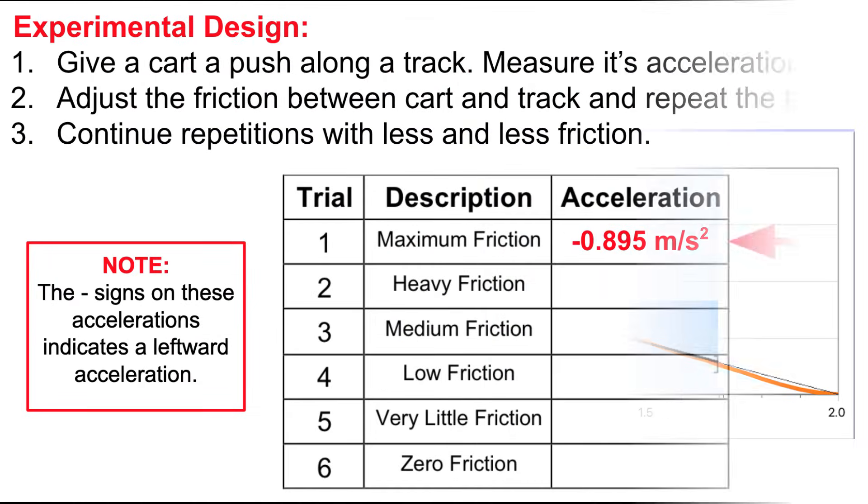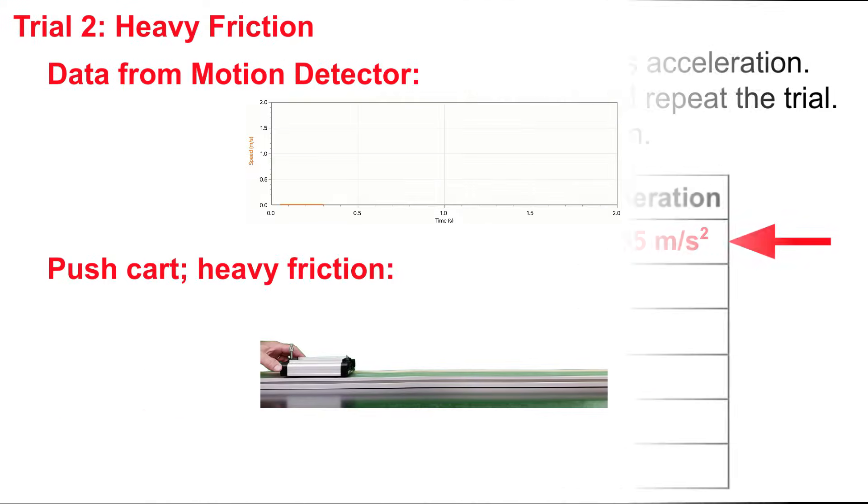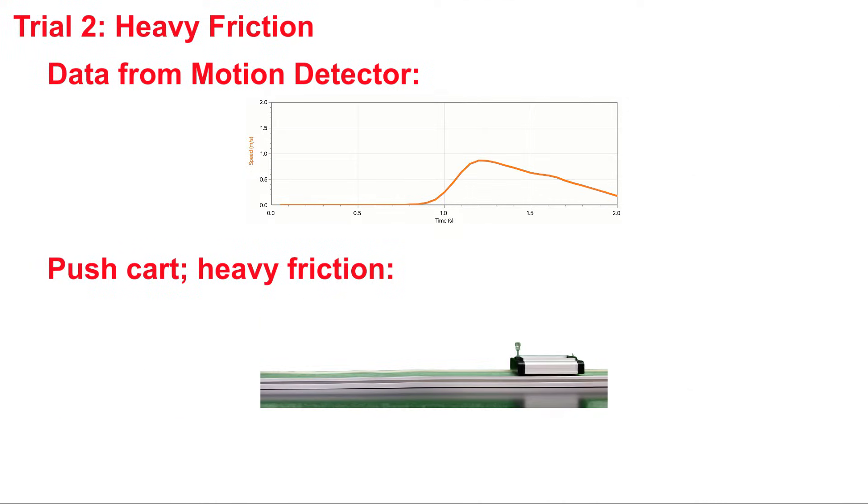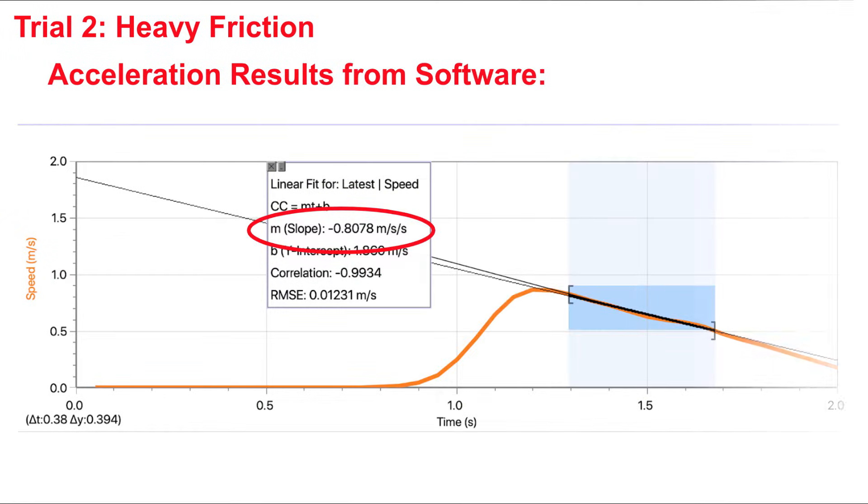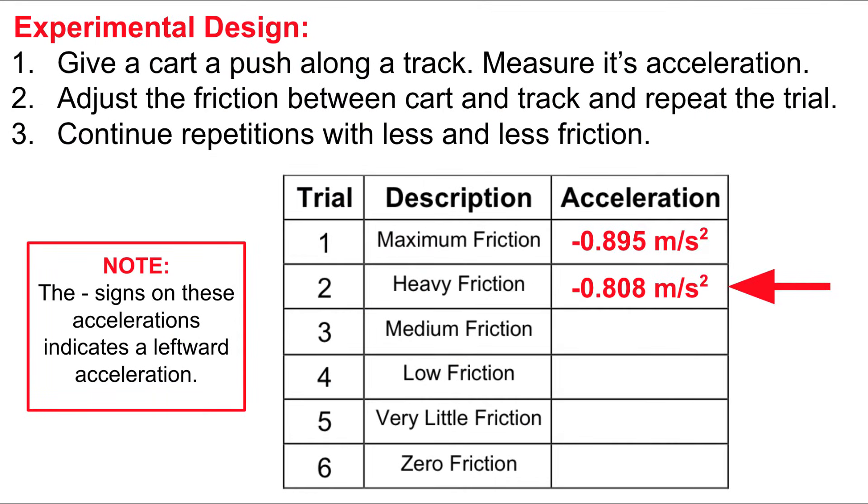We're going to enter that into our table. We're going to adjust the friction to heavy friction, a little bit less than what we had, and try again. Here goes. With heavy friction, the slope of the line is negative 0.808. We'll enter it in the table.